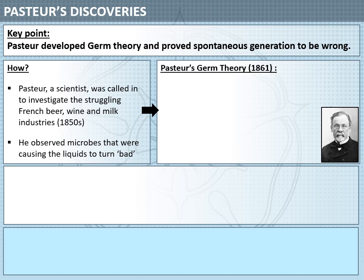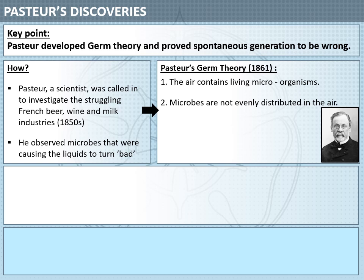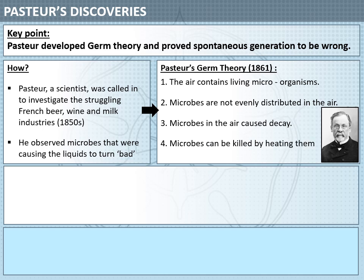That leads him to develop a germ theory, which he publishes in 1861, and it makes four claims. Firstly, that the air contains living microorganisms. Secondly, that these microorganisms are not evenly distributed in the air — you can find more of them in some locations than others. Thirdly, these microbes in the air cause decay. This is the opposite of spontaneous generation, which believes that decay causes microbes — Pasteur says microbes cause decay. And fourthly, he finds that microbes can be killed by heating them.